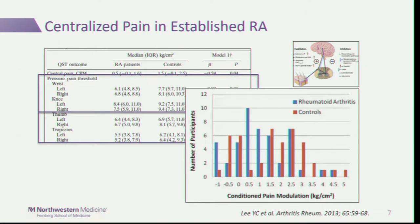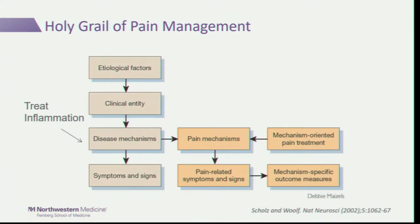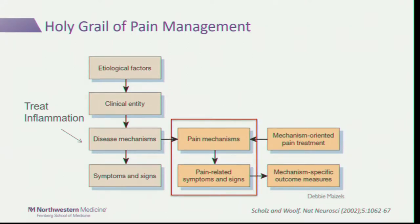We also looked at a more specific measure of centralization targeting the descending inhibitory pathways, and found that RA patients shifted more toward lower inhibition of pain than age- and sex-matched controls. The goal here is to treat the inflammation—we have great drugs to do that—but also to think more about the pain mechanisms, dissect them out, and if needed treat the pain adjunctively through many of the strategies discussed.